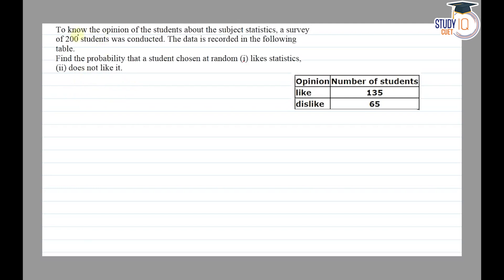The question says that to know the opinion of the students about the subject statistics, a survey of 200 students was conducted. The data is recorded in the following table. Find the probability that a student chosen at random likes statistics and doesn't like it.